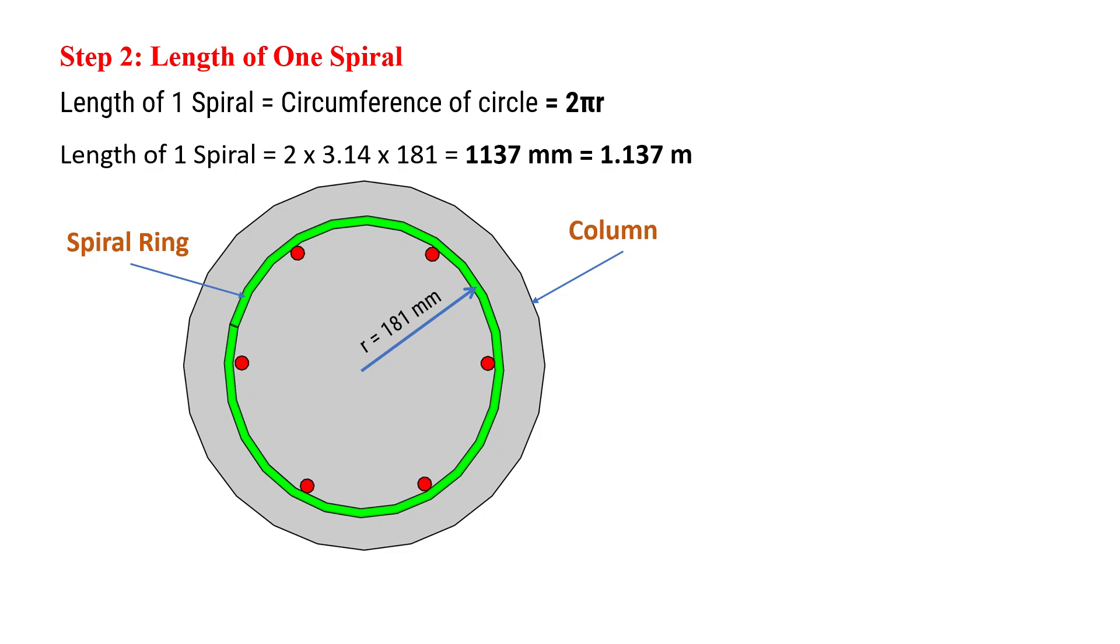Next, we find the length of one spiral using the circumference formula. Length of one spiral will be circumference of circle, that's 2πr, where r is the radius of spiral already calculated as 181 mm.